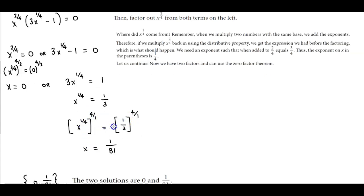So we have x. And then 1 third to the power of 4 over 1 is the same thing as saying 1 third times 1 third times 1 third times 1 third which is equal to 1 over 81. And that's how we're getting 1 over 81.